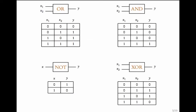Let's start with some basics of hardware circuits. Most of you know these gates: OR, AND, NOT, and XOR. OR is a gate which receives two inputs X1 and X2 and gives an output. A gate is nothing but a circuit. If the inputs are 0 and 0, the output Y is 0. If the inputs are 0 and 1, the output is 1. If the inputs are 1 and 0, the output is 1.